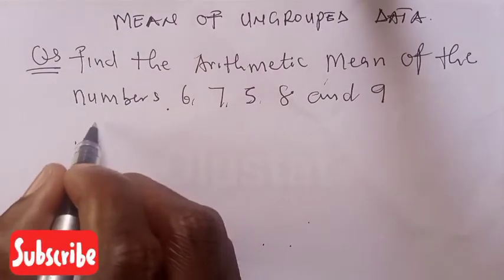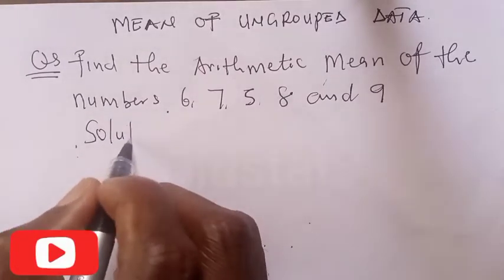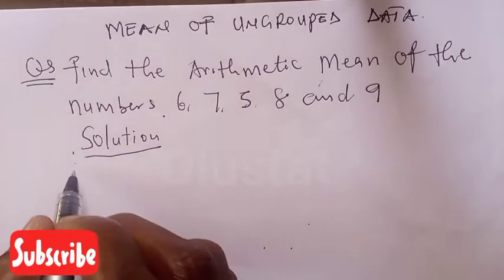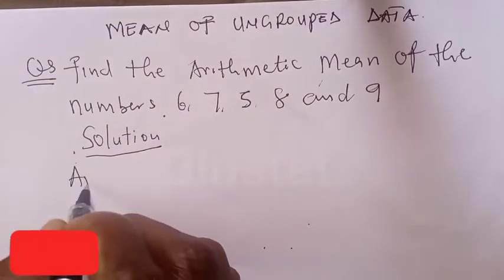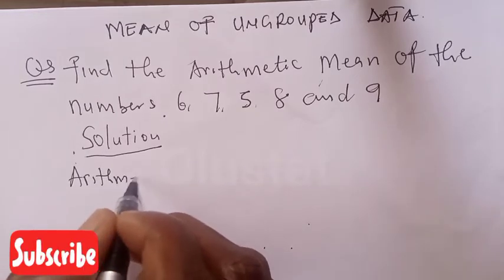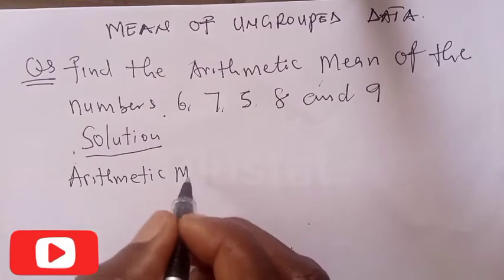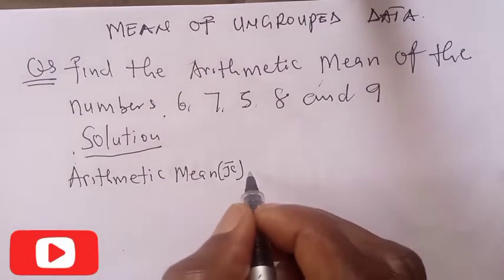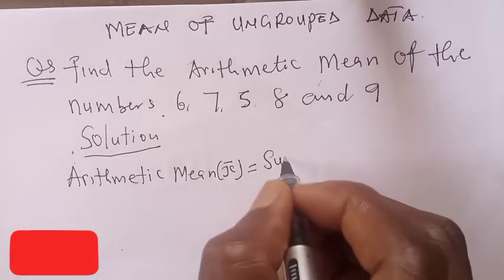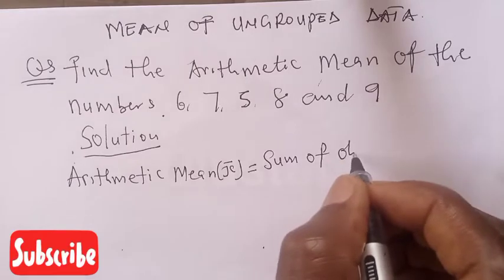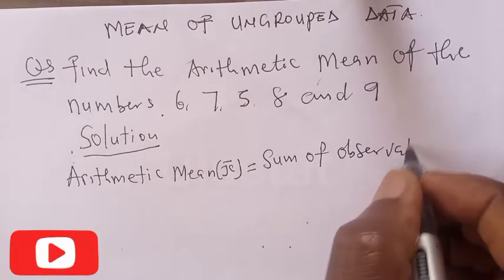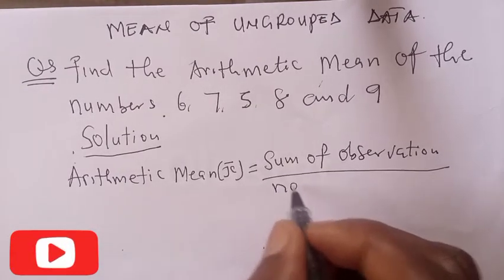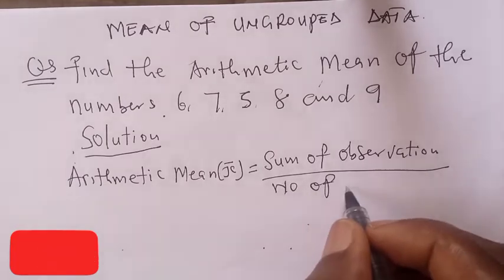Solution. The arithmetic mean, x-bar, is equal to the sum of observations over the number of observations.